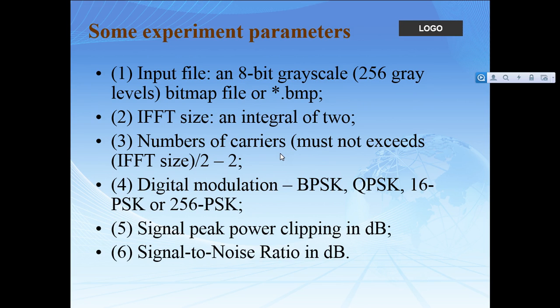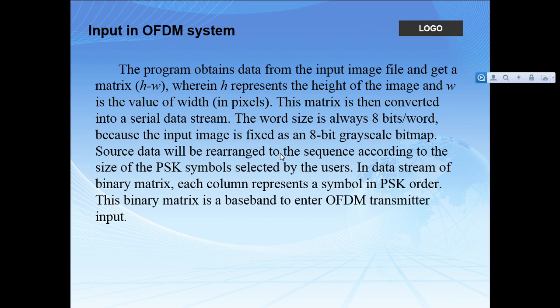Some items to clarify: first, the input file — we use an 8-bit grayscale bitmap to experiment with this system. Then the IFFT size and number of carriers used to carry the data stream. The digital modulation type is a very important part of the whole process; we use different options like BPSK, QPSK, and 16-PSK. We also have signal-to-noise ratio in dB as an input parameter.